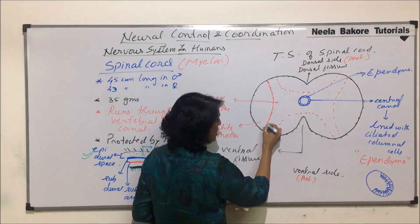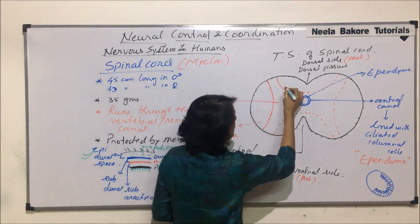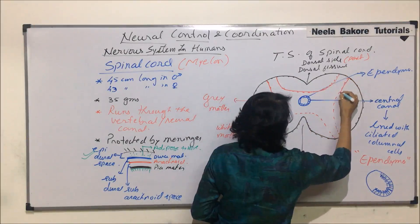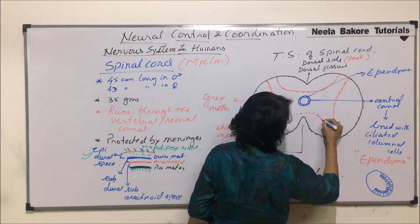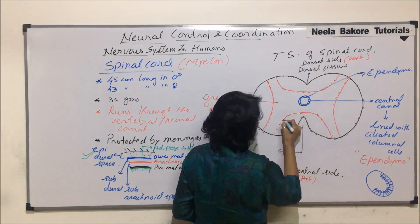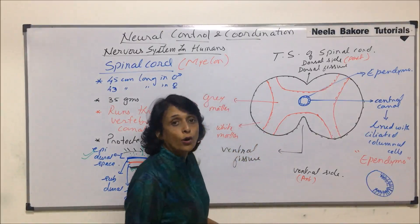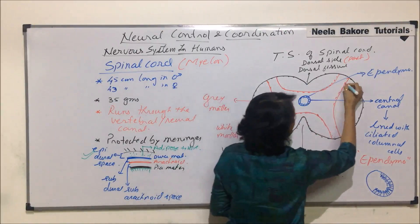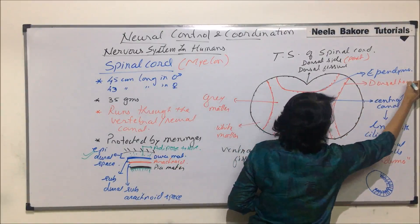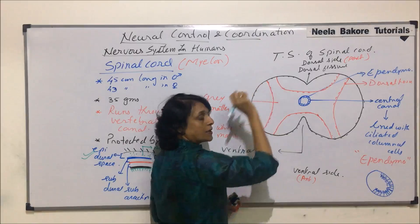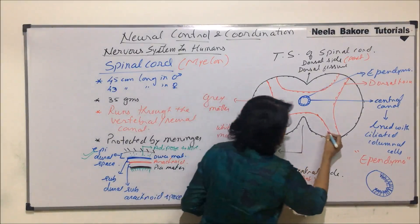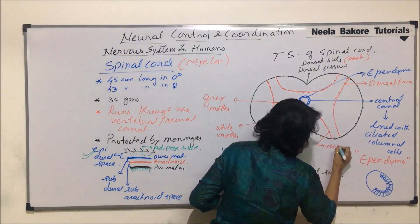Because of this H-shape, there are two extensions on the dorsal side and two extensions on the ventral side. These extensions are known as columns or horns. The ones on the dorsal side are called dorsal horns, and the two extensions on the ventral side form the ventral horns.